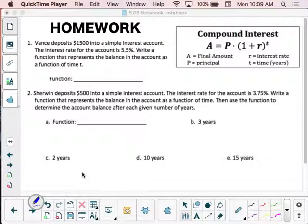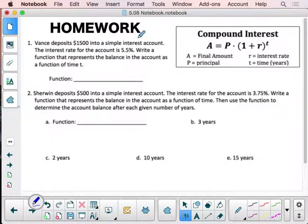Problem number one starts out. It says Vance deposits $1,500 into a simple interest account. So as soon as I know I'm dealing with a simple interest account, I know that this function that they're asking me to write is going to be linear. The interest rate for the account is 5.5%. Write a function that represents the balance in the account as a function of time.